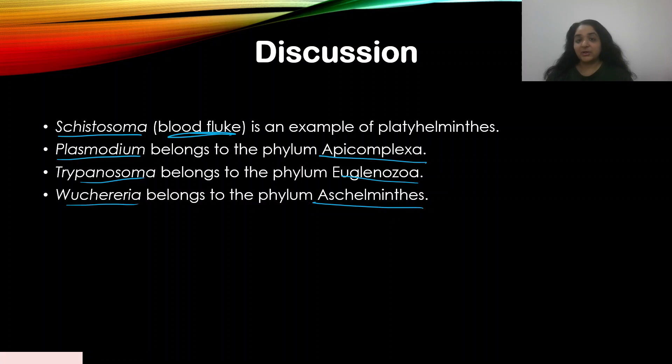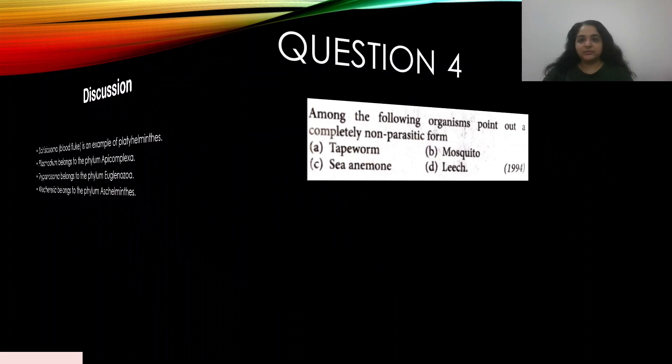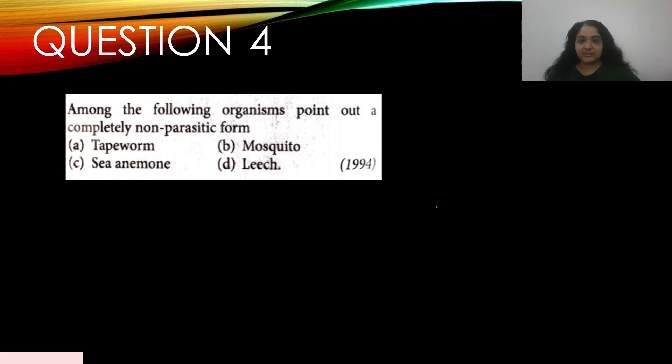Question number four: among the following organisms, point out a completely non-parasitic form — appeared in 1994 — A) tapeworm, B) mosquito, C) sea anemone, D) leech. The non-parasitic form is sea anemone. Tapeworm, mosquito, and leech are all parasitic forms. The answer is C.